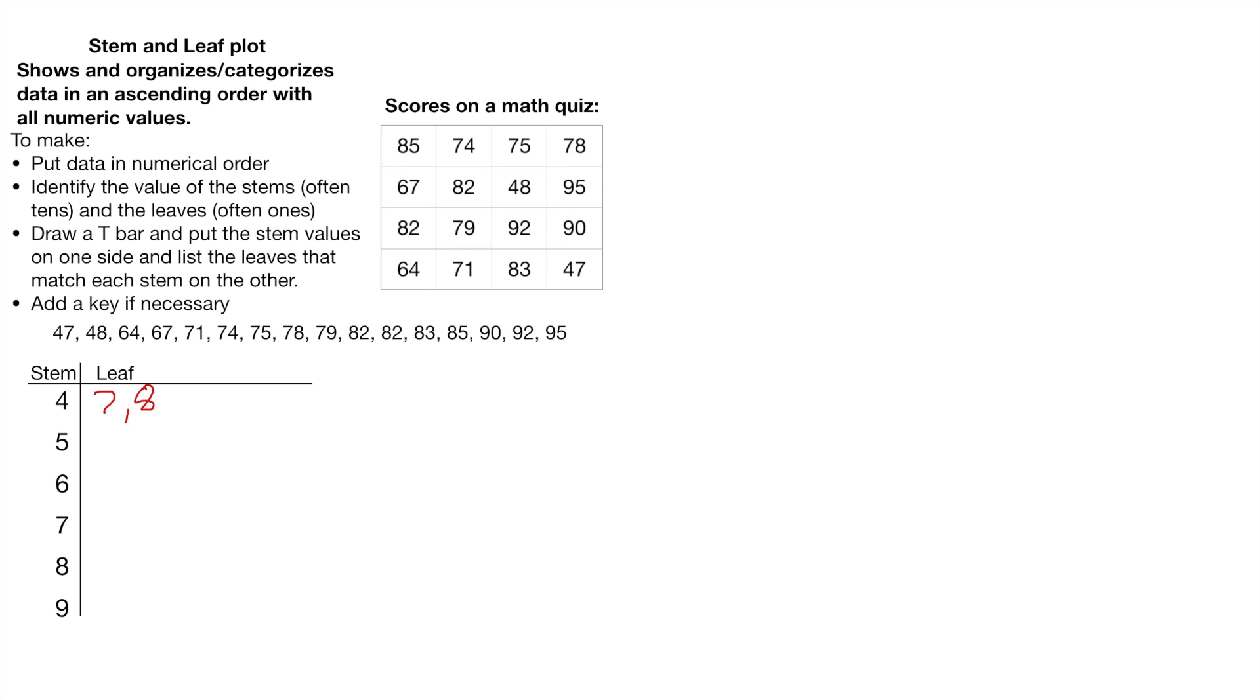I'm going to continue on with all the other values I have. Now there were no 50s, so I'm going to leave the blank after those. In the 60s, we have 64 and we have 67. For the 70s, we had 71, 74, 75, 78, and 79. And then for the 80s, we had 82. We had another 82. We had an 83 and we had an 85. And then finally, we had 90, we had 92, and we had 95.